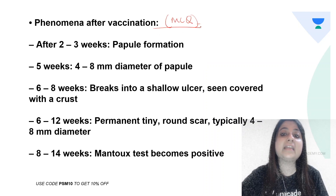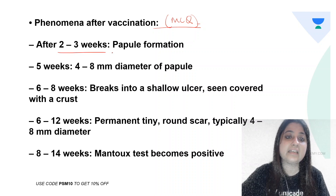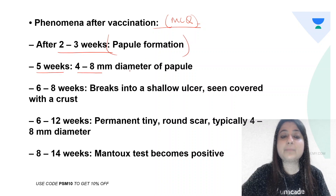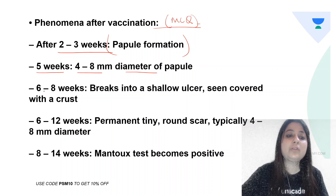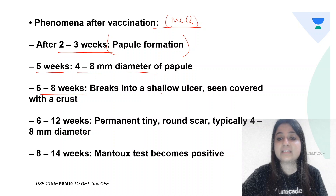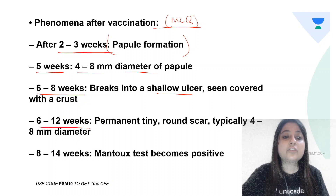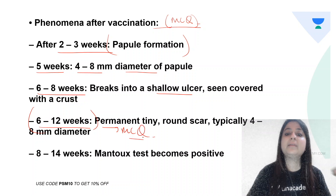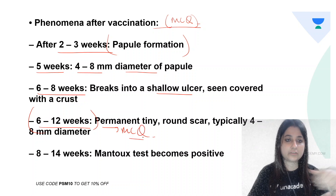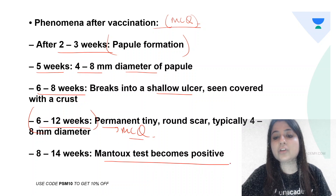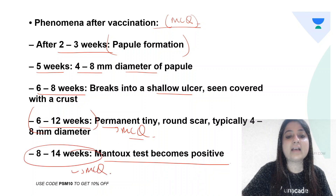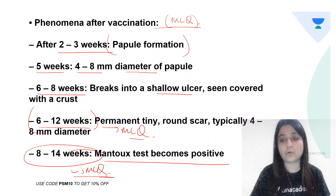After vaccination, the phenomenon we see is: at 2 to 3 weeks a papule forms; at 5 weeks it is a papule of 4 to 8 mm diameter; at 6 to 8 weeks it breaks into a shallow ulcer; and at 6 to 12 weeks a permanent tiny rounded scar forms. When does the Mantoux test become positive? At 8 to 14 weeks. These are very important MCQ points.